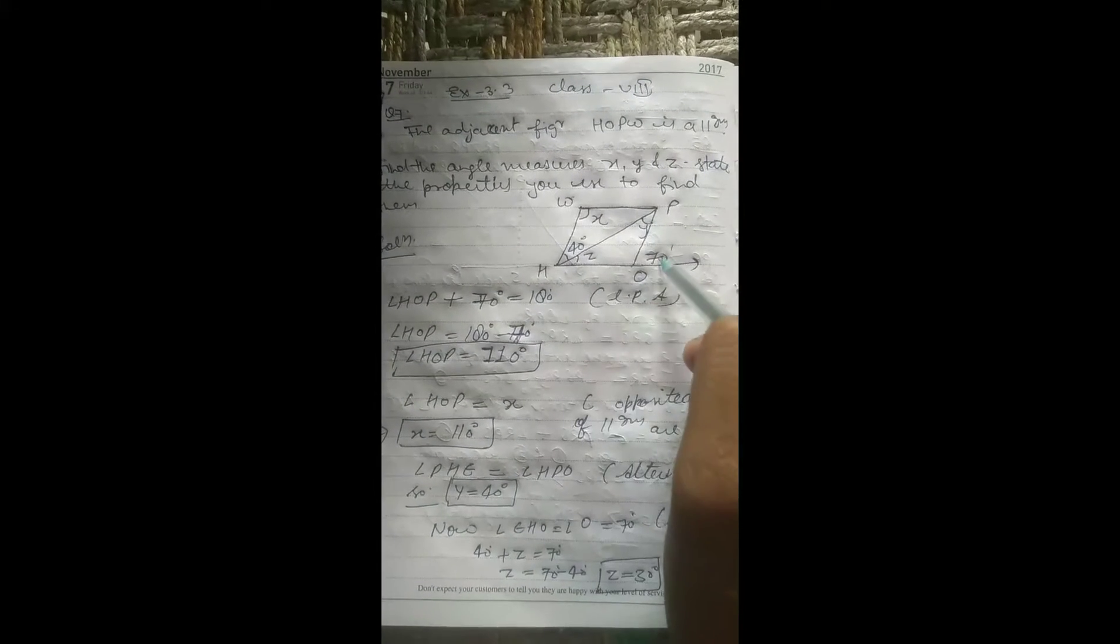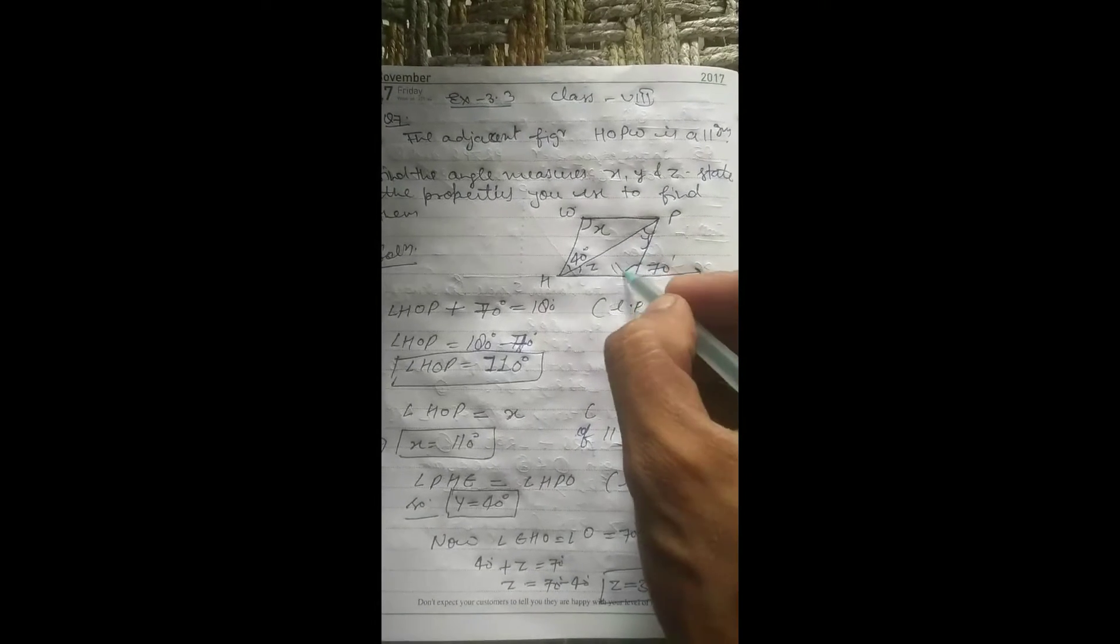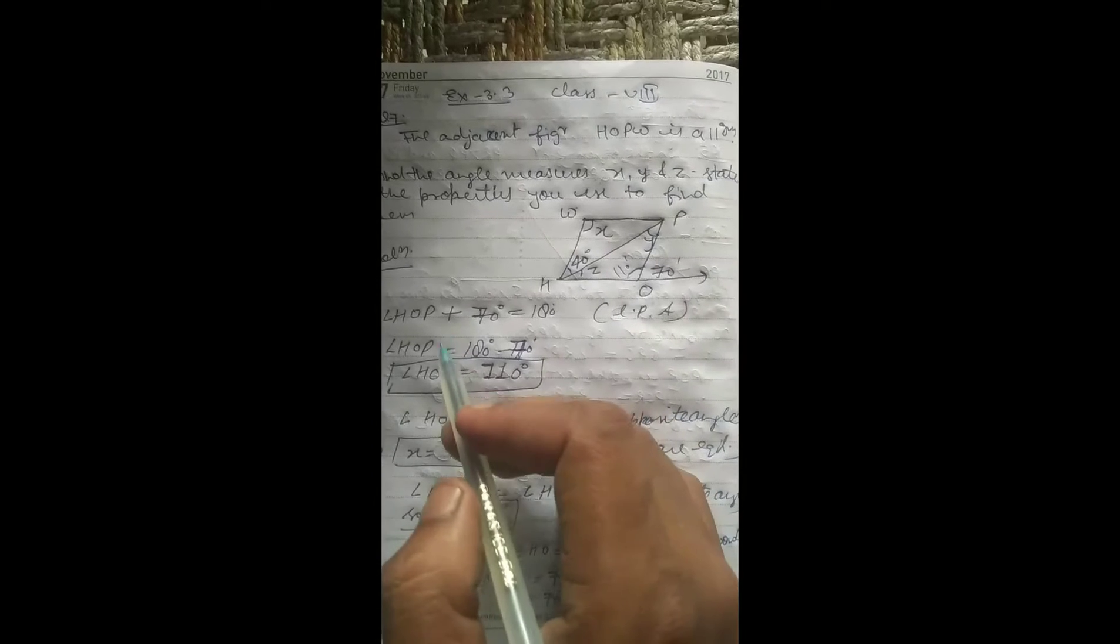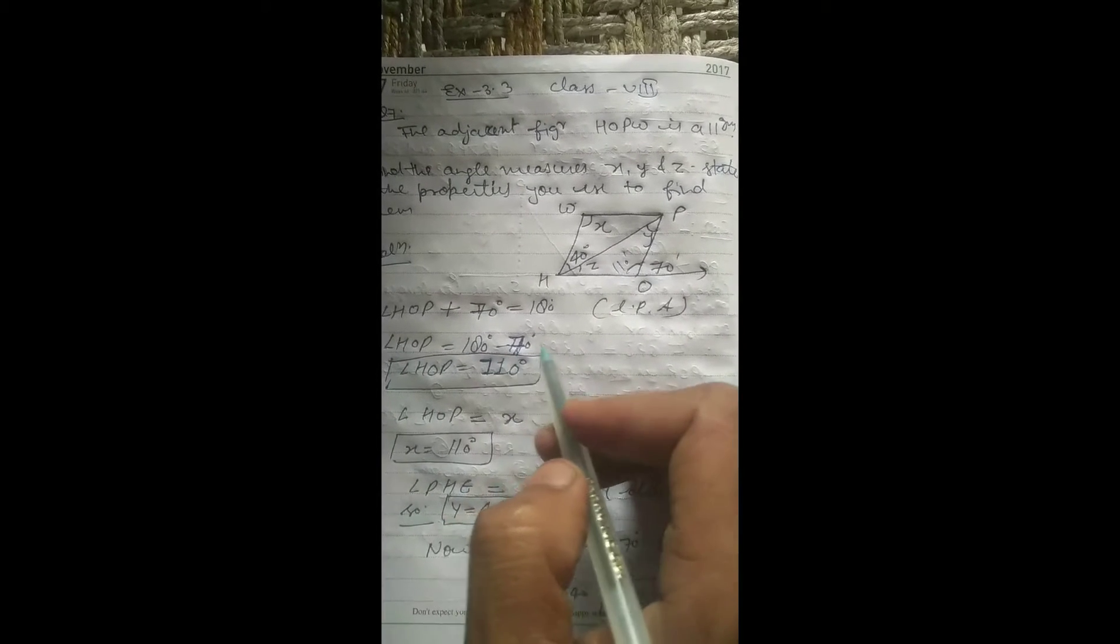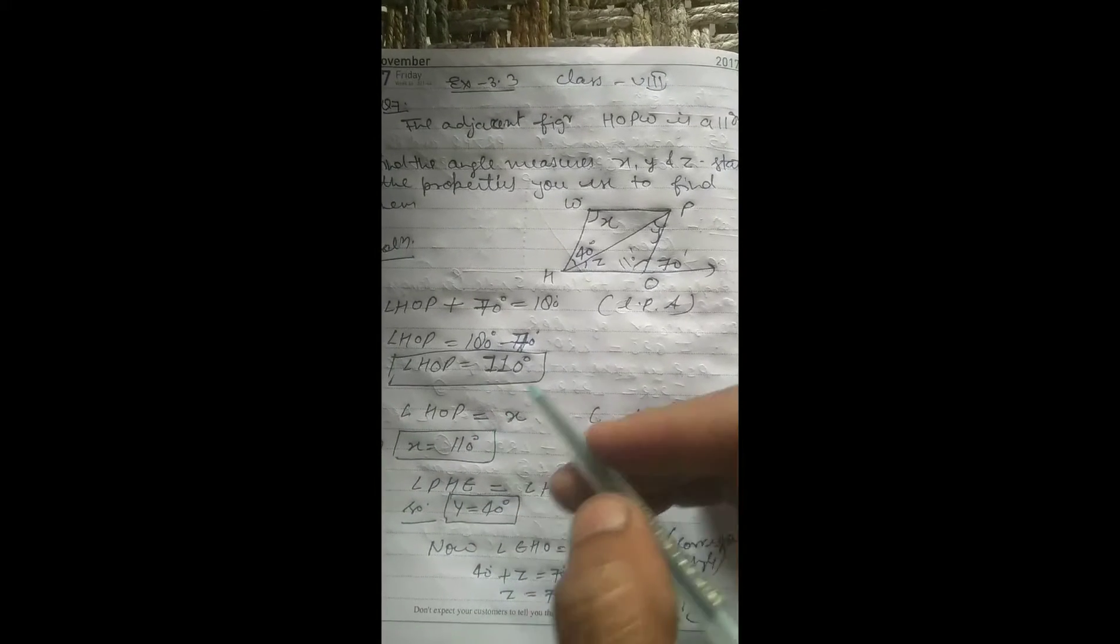So angle HOP plus 70 degrees equals 180 degrees because of linear pair angle. So angle HOP is 110 degrees. HOP equals 180 degrees minus 70 degrees, HOP equals 110 degrees.